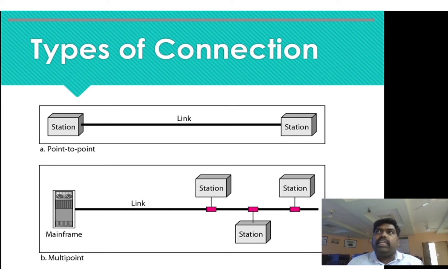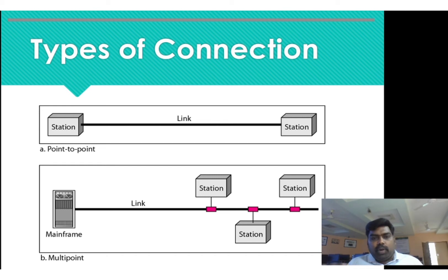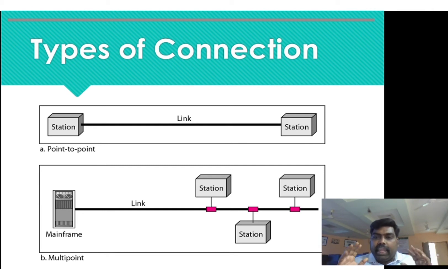Types of connection. If you have nodes connected, you will have two types of connections: point-to-point connection and multipoint connection. In a point-to-point connection, you will have a dedicated link between two devices. If you have two systems, you have a dedicated communication link — that is called point-to-point connection.